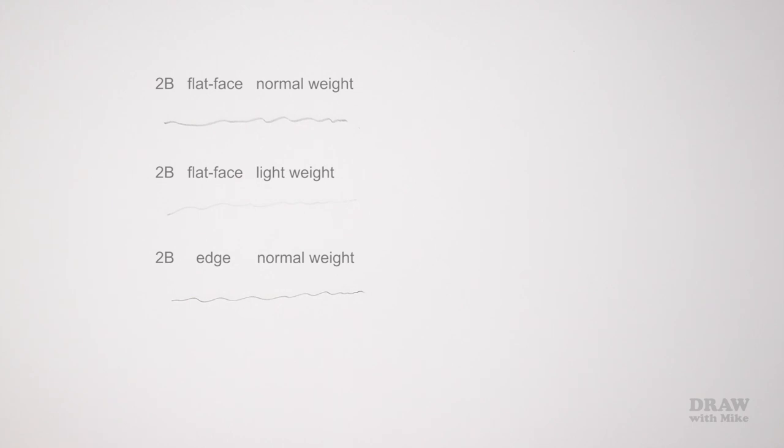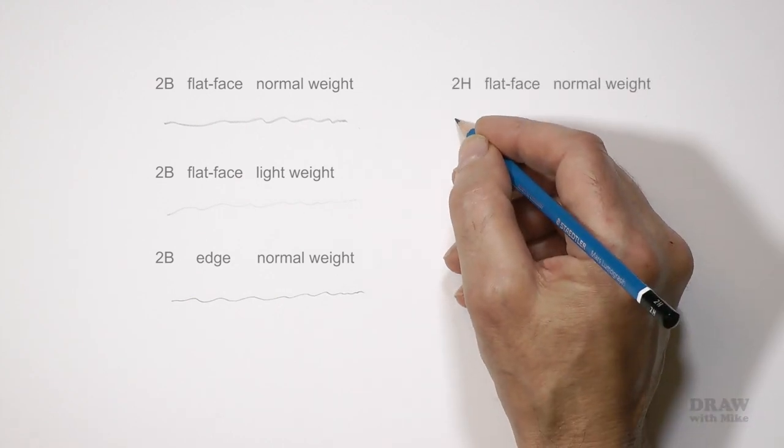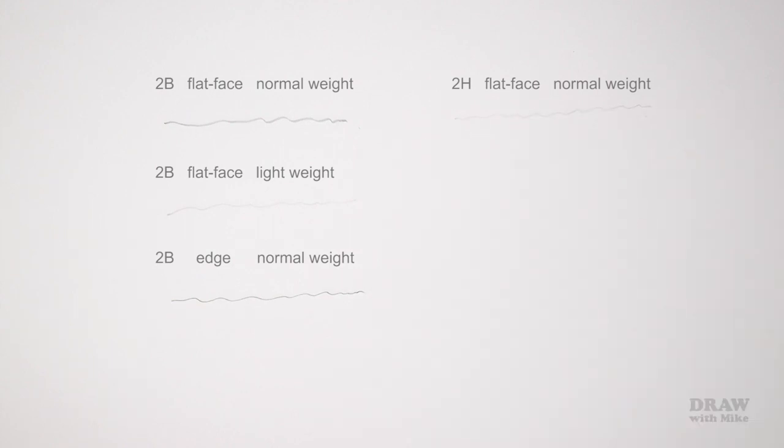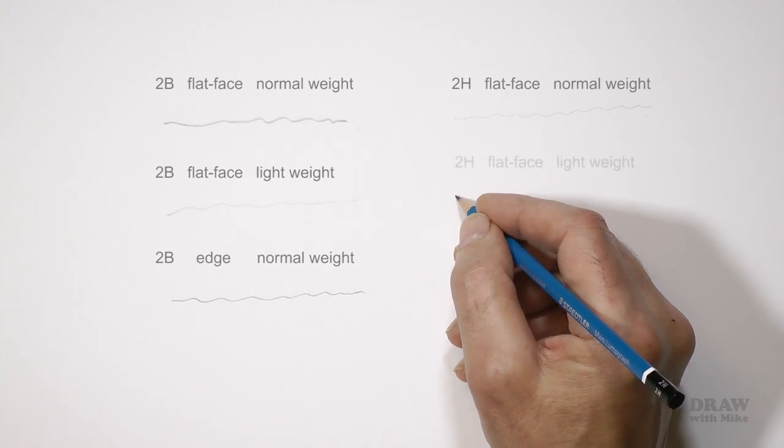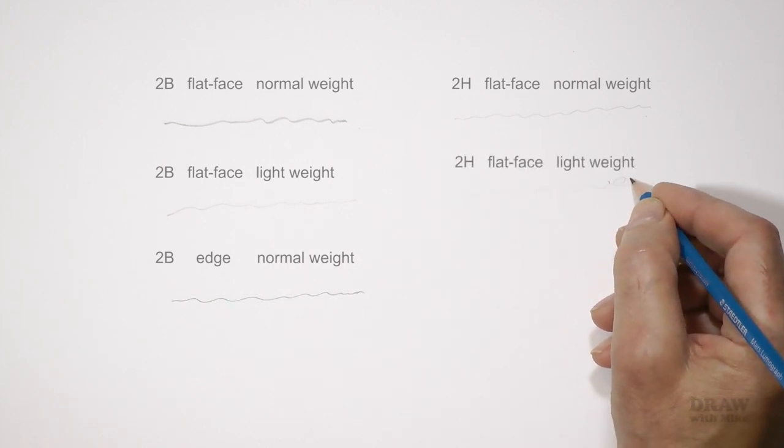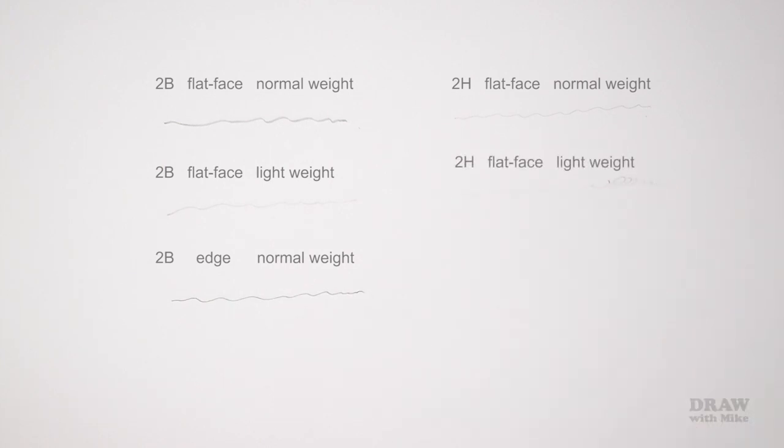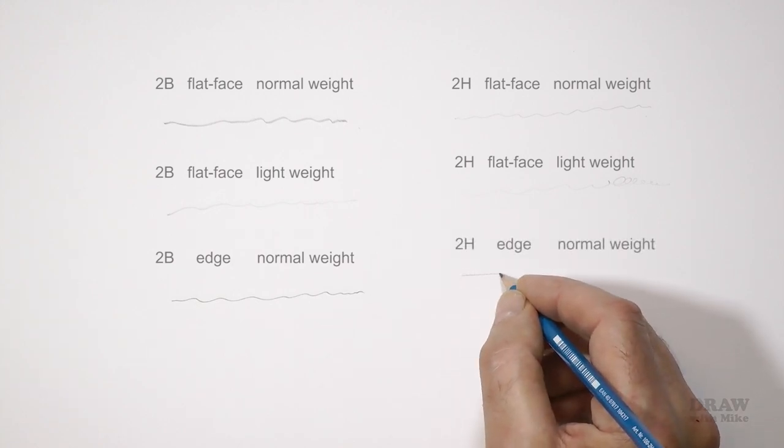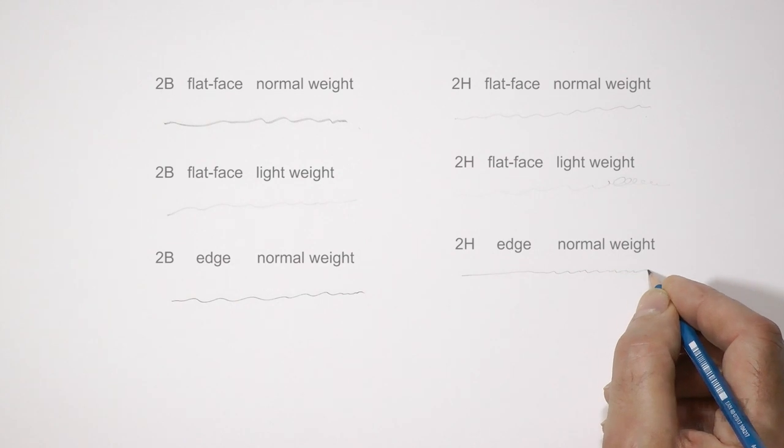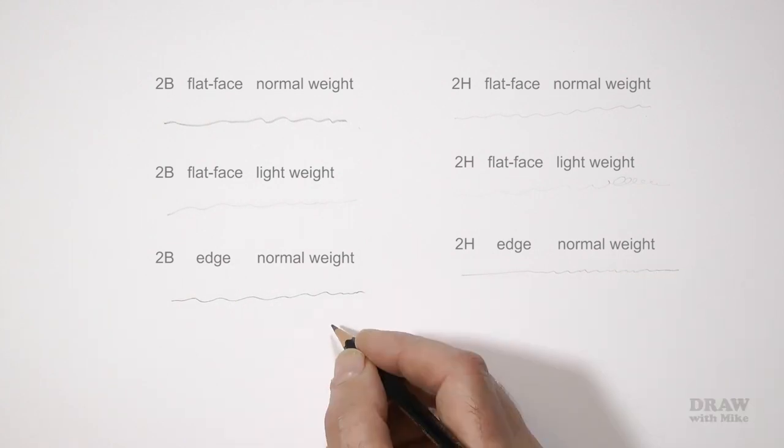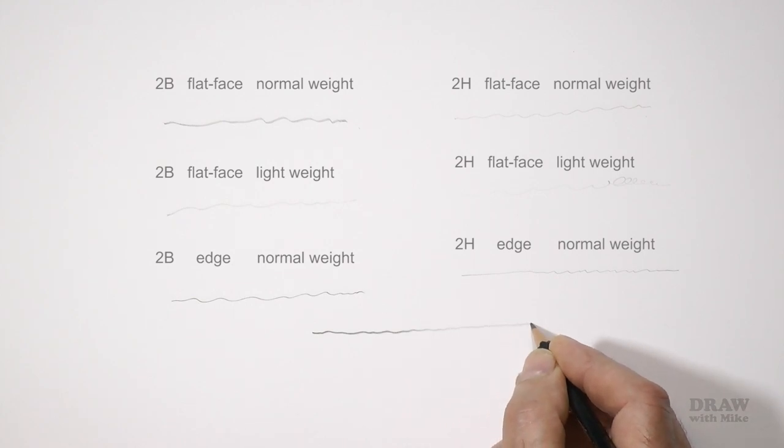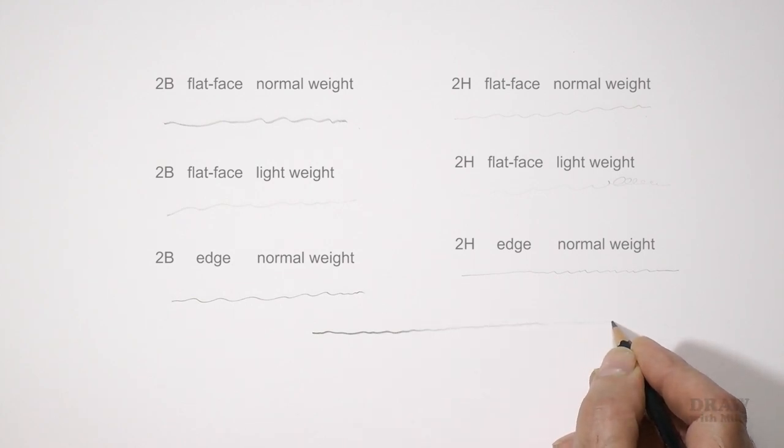And now let's try a hard grade. This is a 2H. As you'll see, different grades produce different qualities of line. Changing the weight creates a variety of effects and values. Value is also known as tone. It refers to the relative darkness and lightness of the mark or area of shading. And as you decrease the weight you decrease or lighten the value. It's why we only need every other grade.